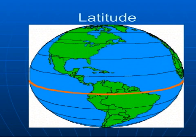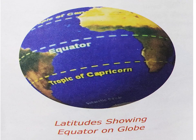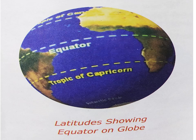The equator divides the earth into two equal hemispheres. The portion of the earth which lies to the north of the equator is the northern hemisphere, and the other portion which lies towards the south of the equator is called the southern hemisphere. The lines of latitude are often called parallels as they run parallel to each other.